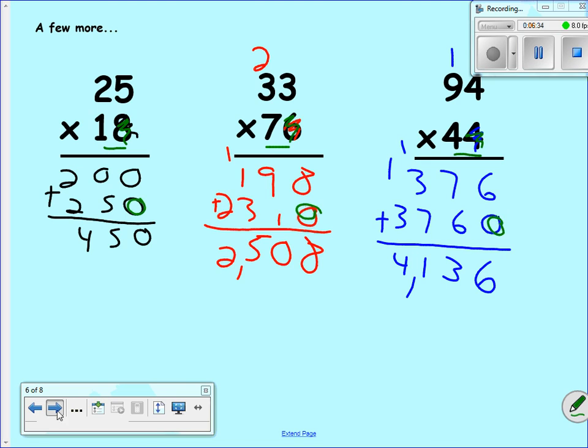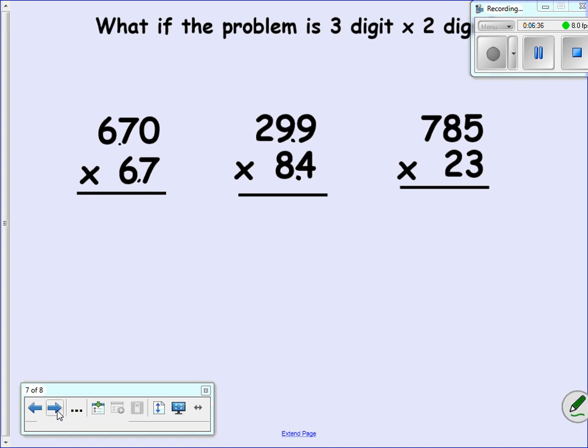All right, let's take a look and see what we can do with some decimals here. Now I've got decimals in my problem. The nice thing with multiplication, kids, is you don't have to line up the decimal. It's not like adding or subtracting. You just go ahead and work out the problem. 7 times 0, I have 0. 7 times 7, I have 49. 7 times 6 is 42. Plus 4 is 46.